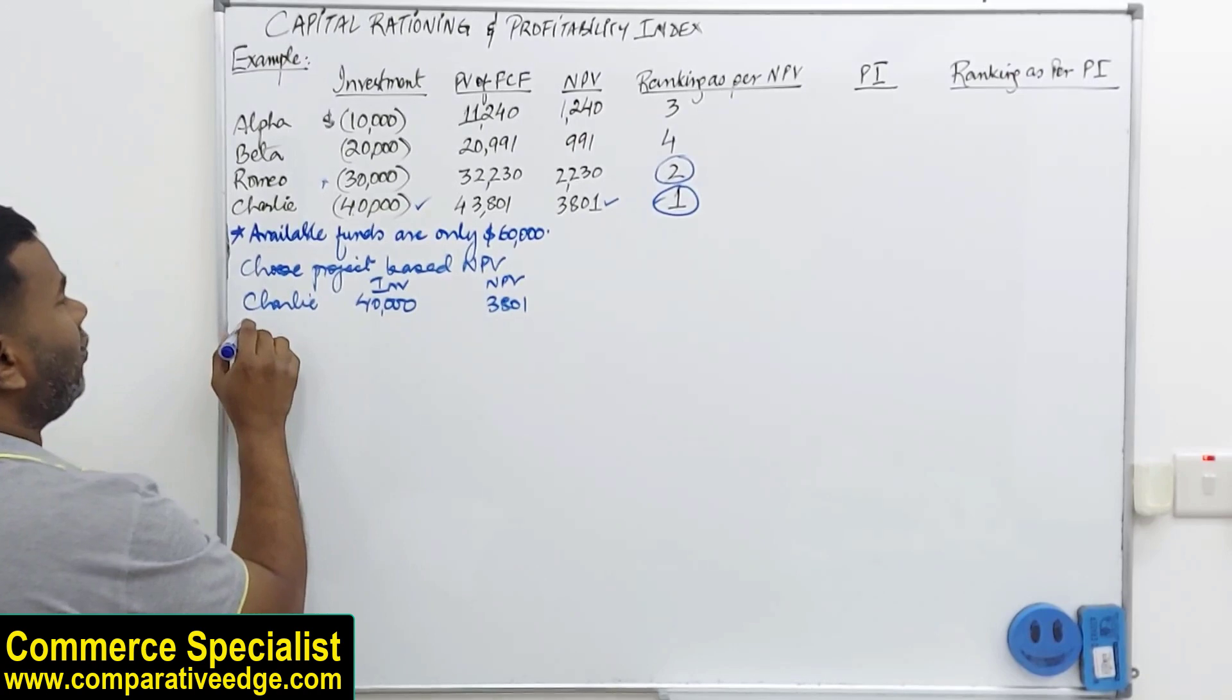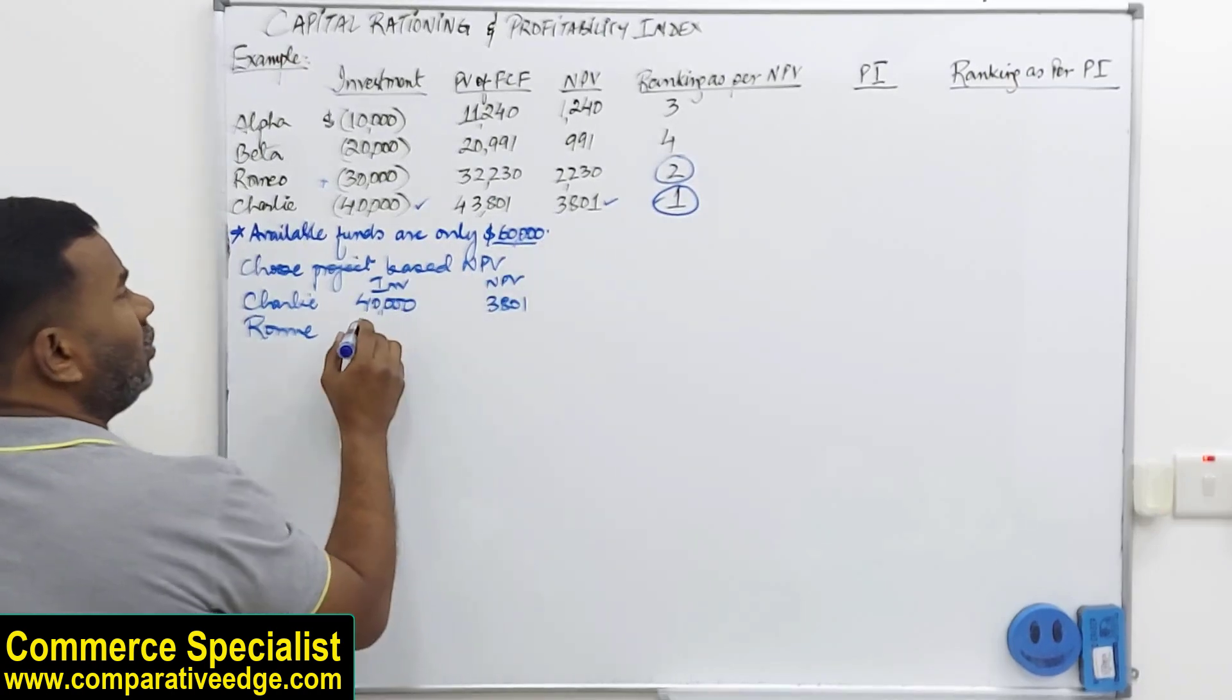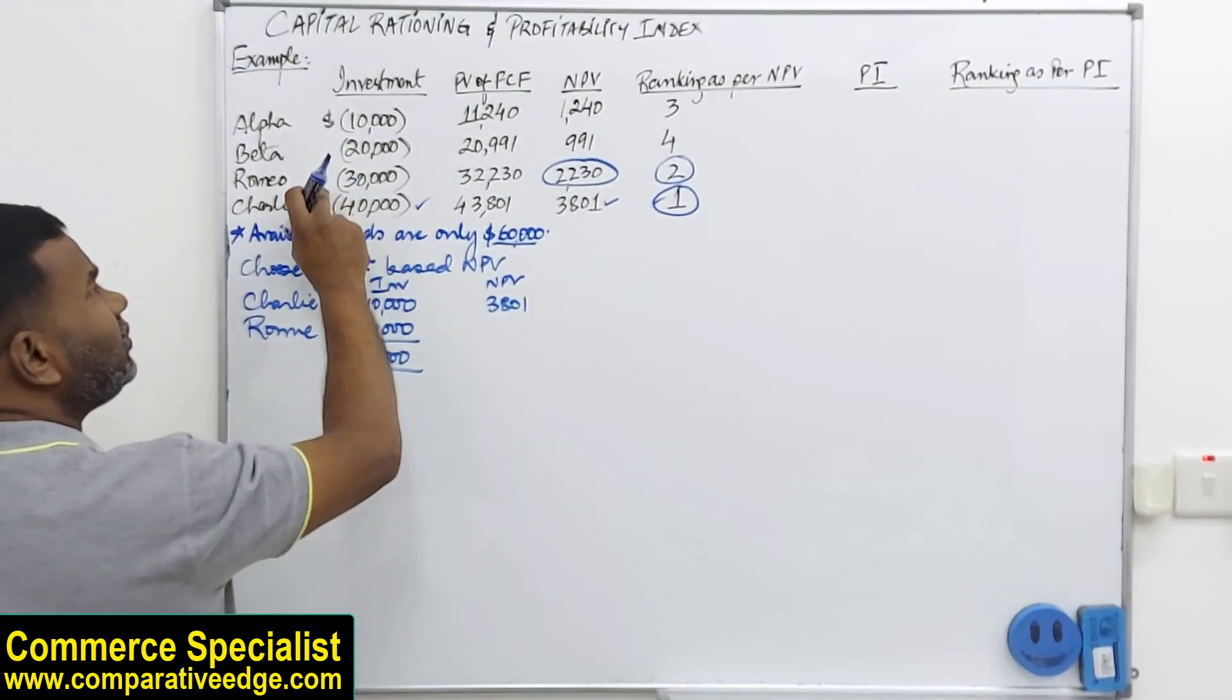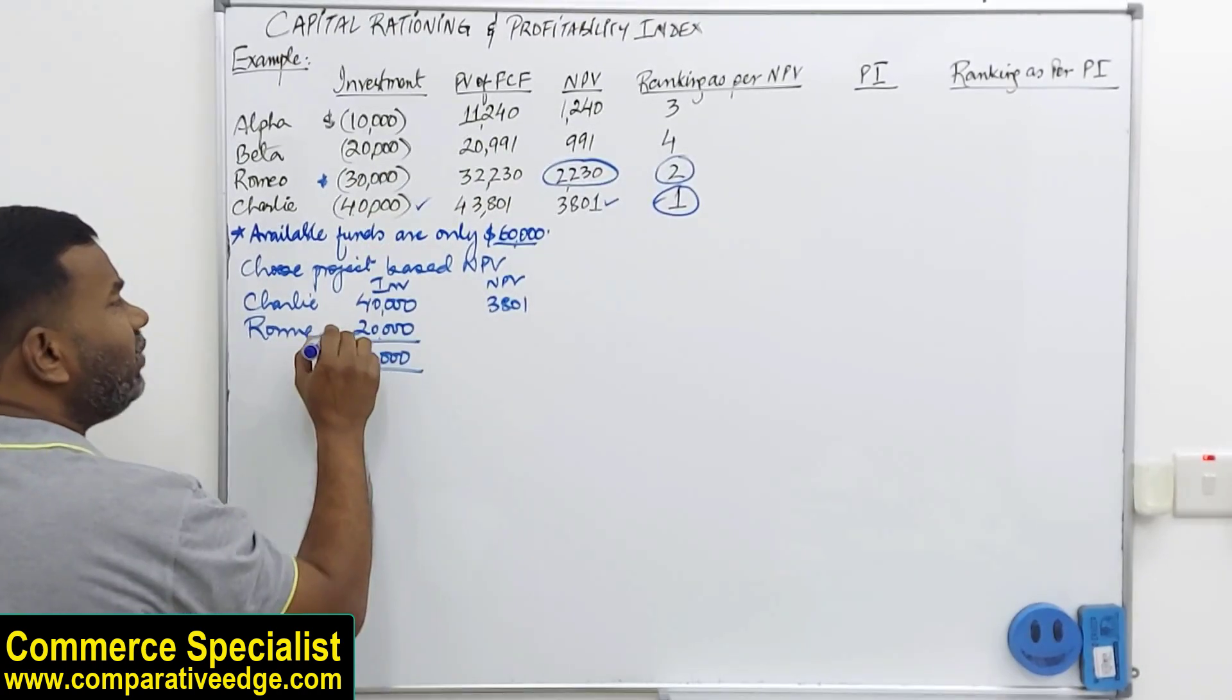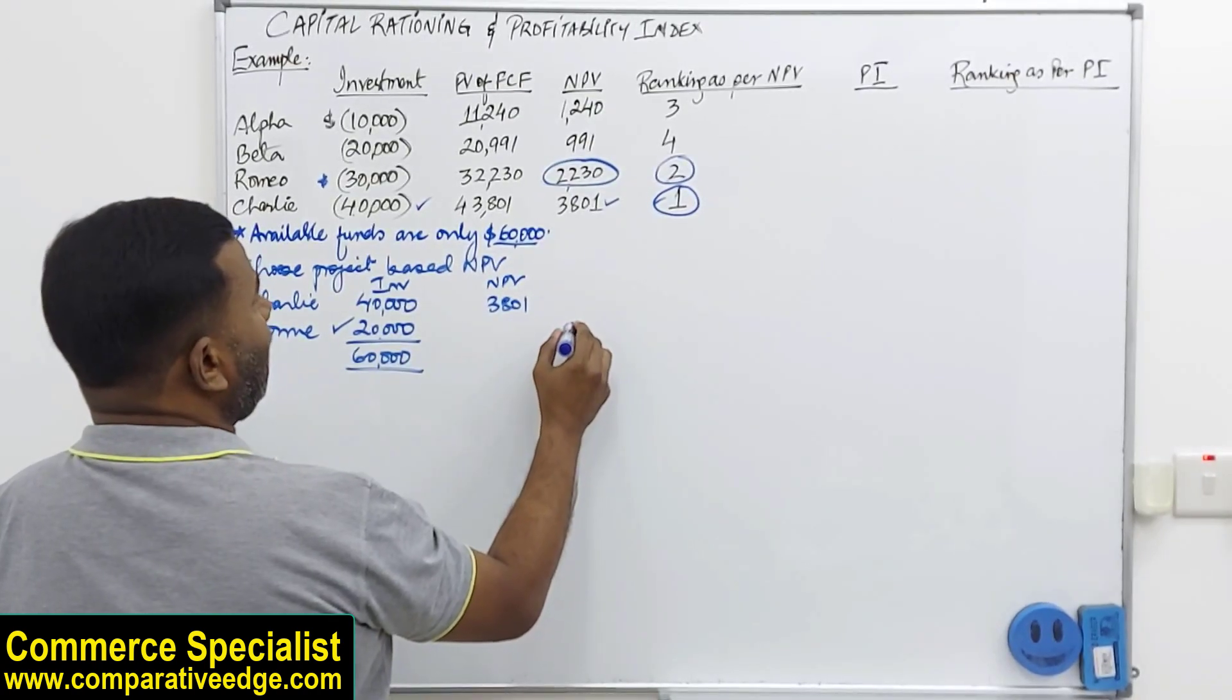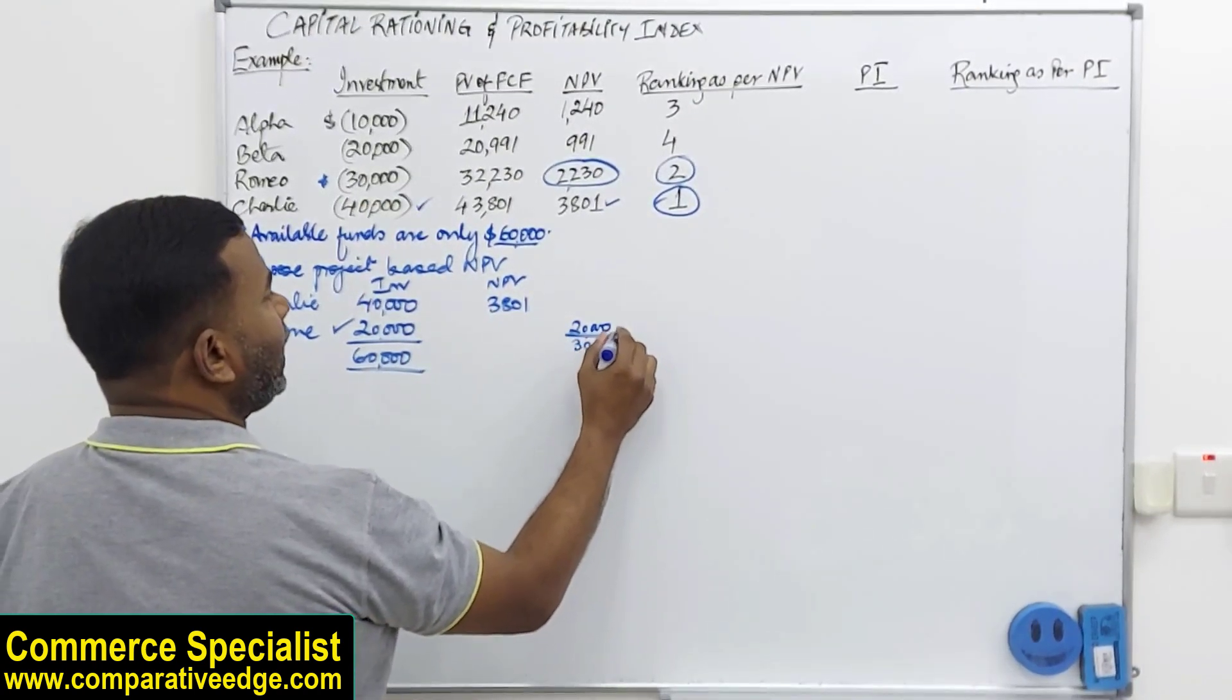My second option is Romeo. Investment required is 30, but I have only 60. So I can only invest 20,000 here. That's how my total 60,000 is spent. If I invest 30,000 in this project, I will get this NPV, but I am not investing 30. I am only investing 20,000. So I am prorating it. So for example, I am investing 20,000 whereas the investment required is 30. So that makes two-thirds.